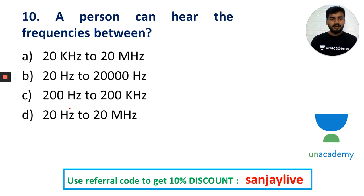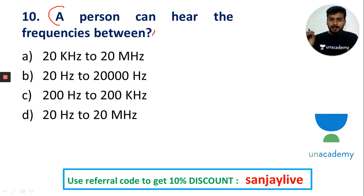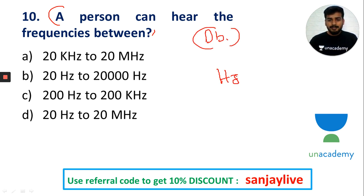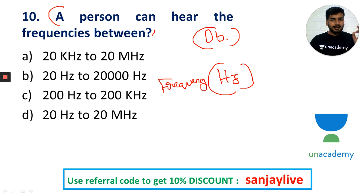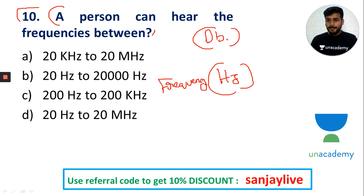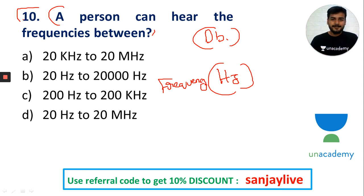The human audible range — frequency is measured in hertz (Hz). Sound intensity is measured in decibels. Frequency measurement uses hertz. The question is about what unit is used for frequency measurement in the context of human audible range. Sound cannot travel in a vacuum.